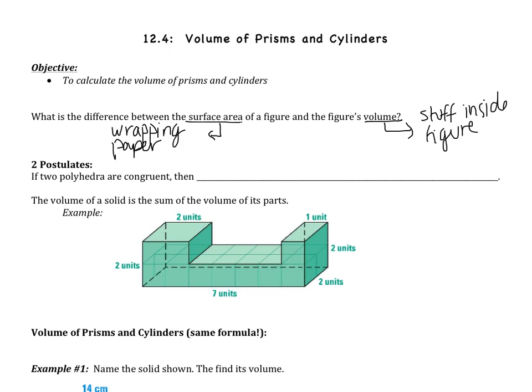Jumping into two postulates. The first one: if two polyhedra are congruent, then their volumes are equal. So if two polyhedra are congruent — they have all the same sides and angles — they're going to have the same volume. That should make sense; they're the same shape if they're congruent.